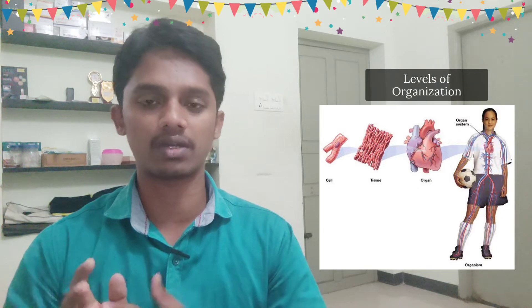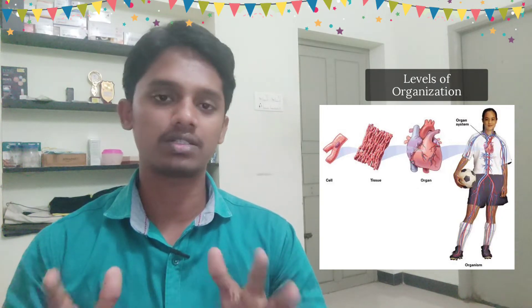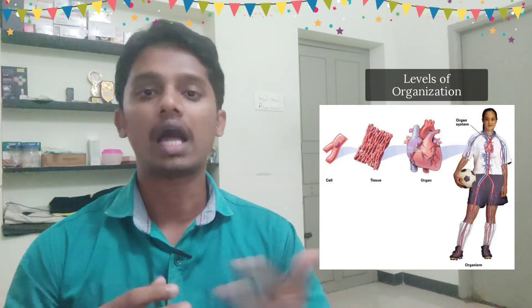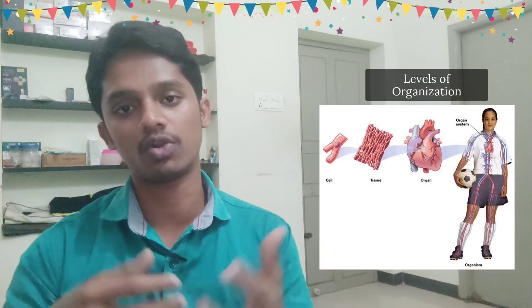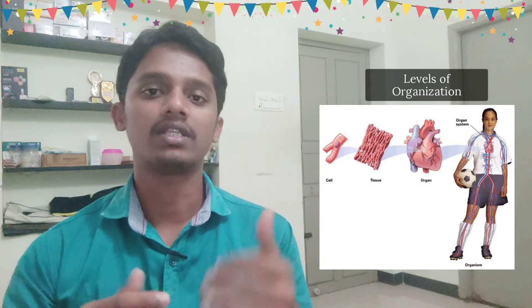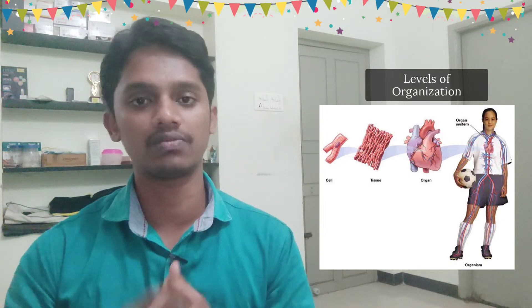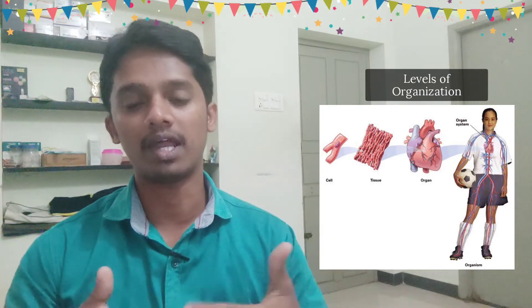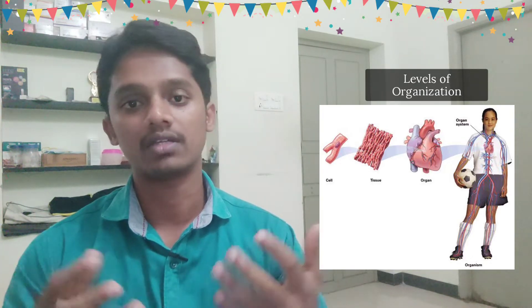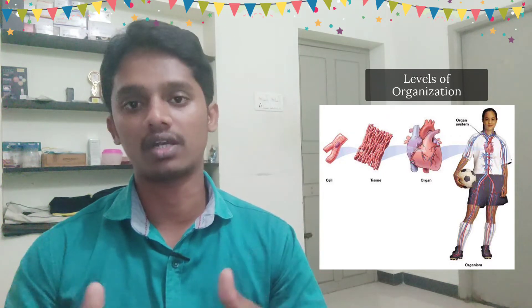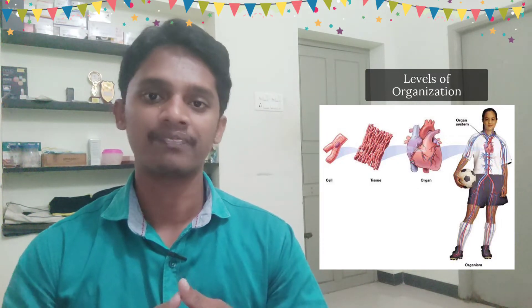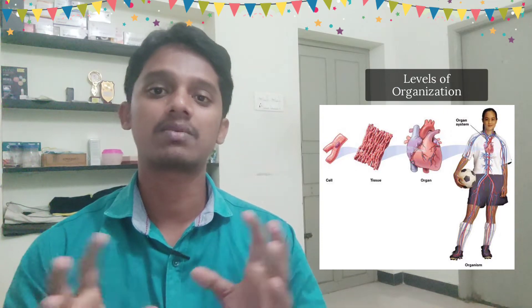If we have a body, we have tissue, organ, and system — and we have a cell. A large group of cells forms tissue, and a group of tissues forms an organ, and organs form systems. For example, the heart is part of the cardiovascular system, blood is part of the circulatory system, skin is the integumentary system, the reproductive organ is the reproductive system, the stomach and intestine form the digestive system, and the lungs are part of the respiratory system. The system is our body.